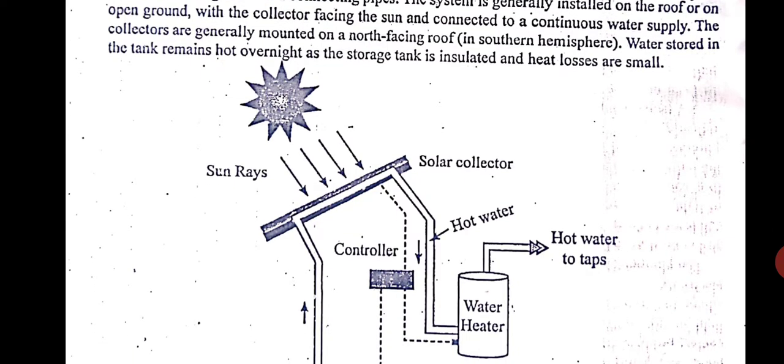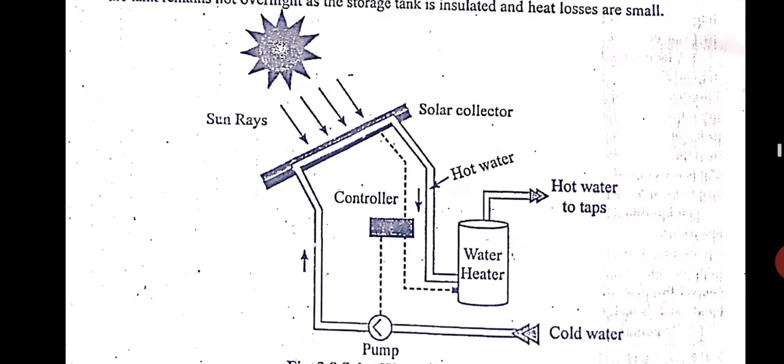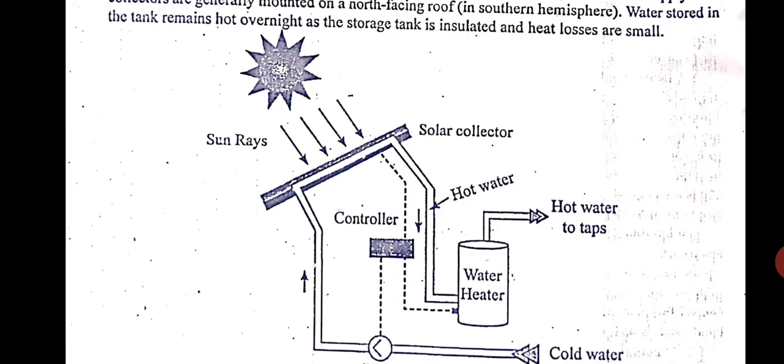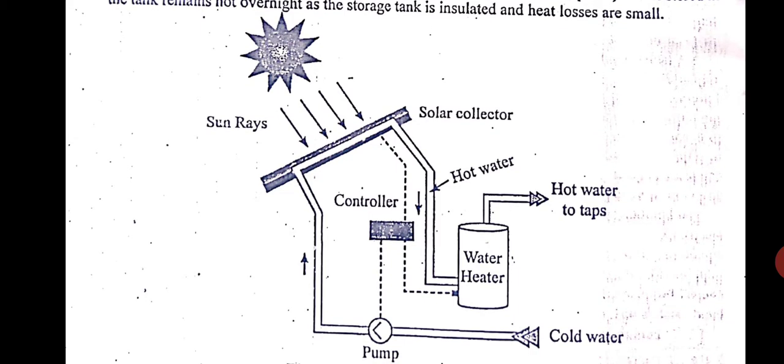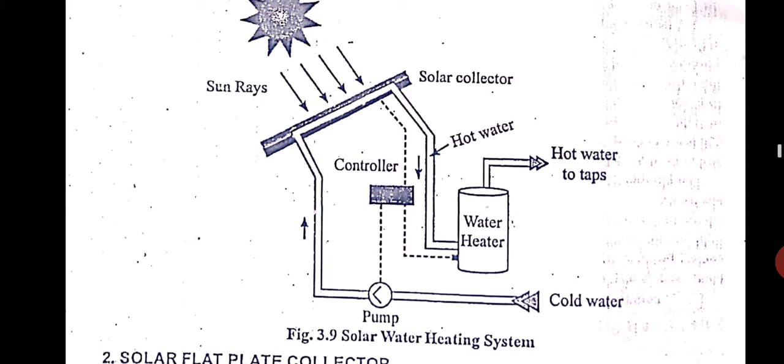The water stored in the tank remains hot overnight as the storage tank is insulated and the heat losses are small. So you can see the sunlight is falling on the flat plate collector. Cold water is supplied continuously - this is wrong actually, it doesn't, it is not supplied. For a house, there will not be a pump. The pump will supply the water to overhead tank and from the overhead tank due to gravity it will flow to the flat plate collector. After getting heated it comes to the storage tank, this vertical tank which is shown here.